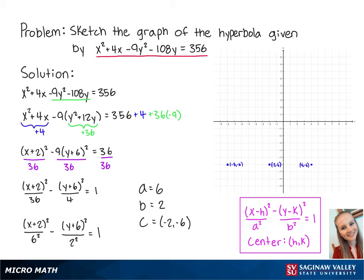Since b is equal to 2, we're going to graph two points, 2 above and 2 below the center. So the first point is at negative 2, negative 4, and the second point is at negative 2, negative 9.